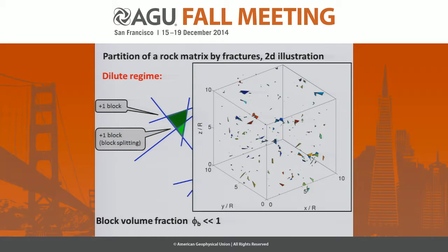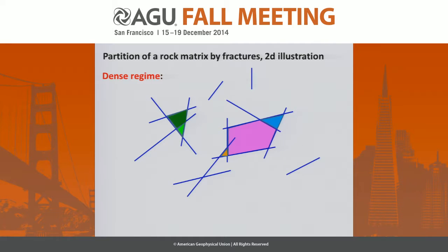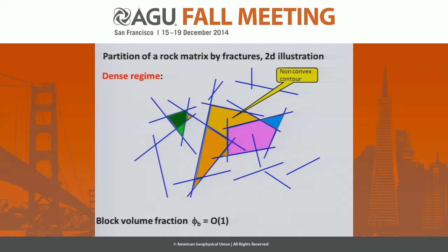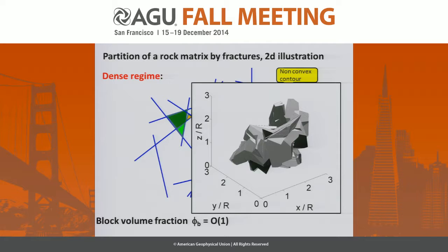Now, if you increase — and this is the 3D picture of what you get — if you increase the density of fractures, this is what I call the dense regime. Then you are still creating blocks, and these blocks may have non-convex contour. They have complex shapes. The block volume fraction is of the order 1, and you can get monsters like this.